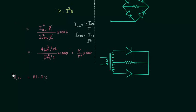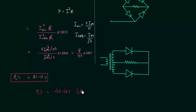This is the efficiency of the full wave rectifier. If you remember from the half wave rectifier, the efficiency was equal to 40.56 percent. So by using the full wave rectifier, we can increase the efficiency by more than 40 percent.